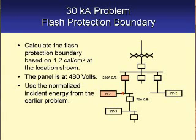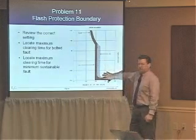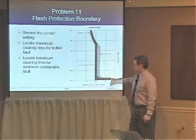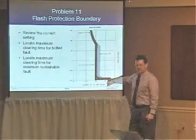This is the 30,000 amp case — 30kA — where we calculated an arcing current of 16.7kA. We calculated the normalized incident energy, and then the incident energy based on our actual 18-inch working distance and actual device clearing time. We still have the time current curve for the 225 amp device with an interruption within a cycle: 0.0167 seconds.